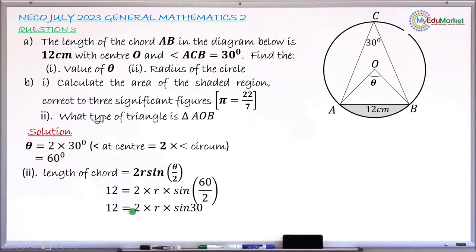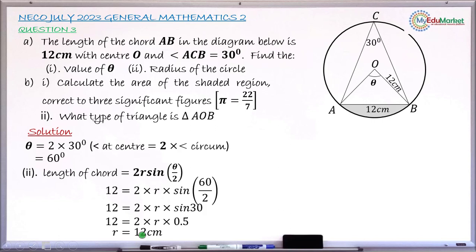This simplifies to 12 = 2 × R × sin 30. The value of sin 30 is 0.5, so 2 × 0.5 = 1, giving 12 = R. Therefore the radius of the circle is 12 centimeters.